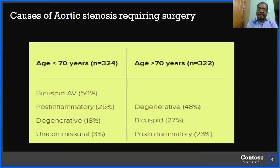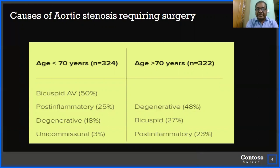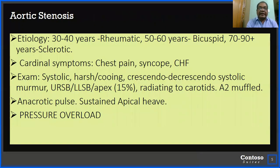Looking at the causes of aortic stenosis requiring surgery: below the age of 70 years, the bicuspid aortic valve predominates at about 50% of cases; post-inflammatory accounts for 25%; and degenerative cases comprise 80% — with unicommissural congenital anomaly comprising only 3%. Above 70 years of age, the degenerative cause predominates at 48%, bicuspid aortic valve is 27%, and post-inflammatory is 23%. In the relatively younger age group of 30–40 years, rheumatic fever predominates; in 50–60 years it is the bicuspid aortic valve; and in 70–90 years it is the degenerative sclerotic disease.